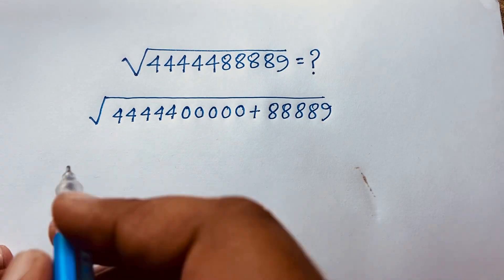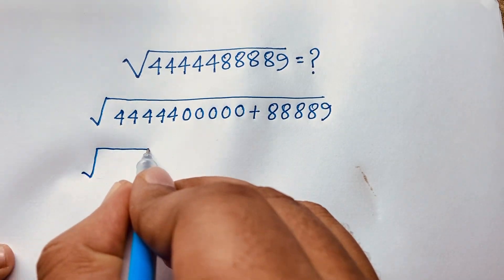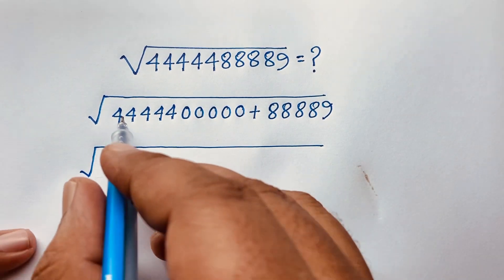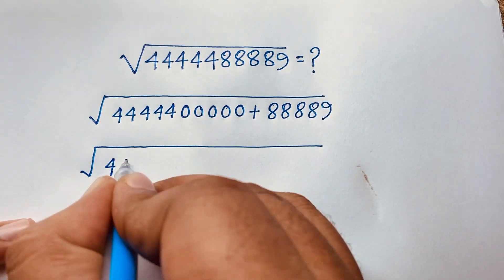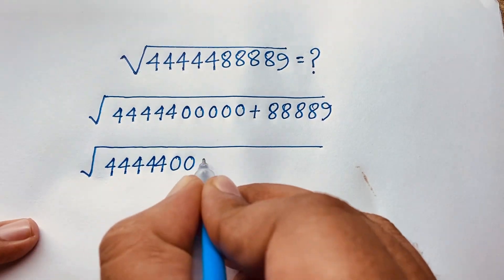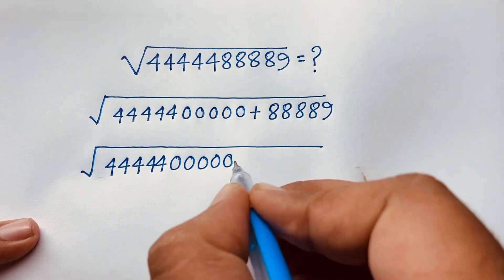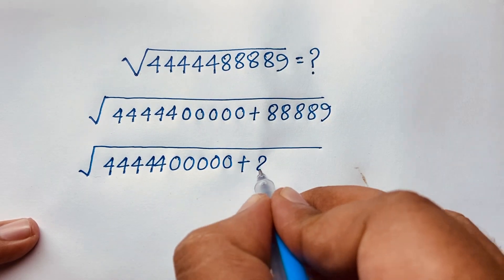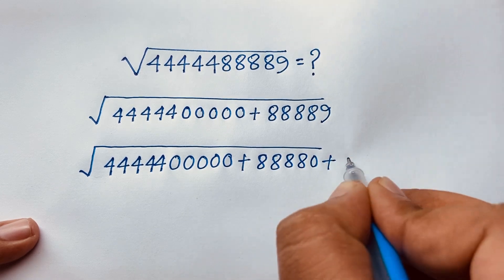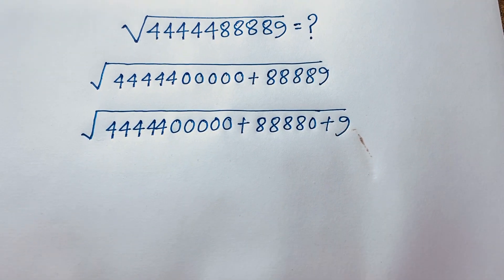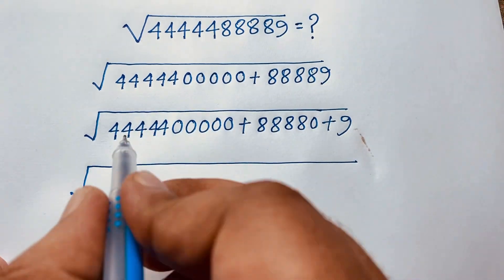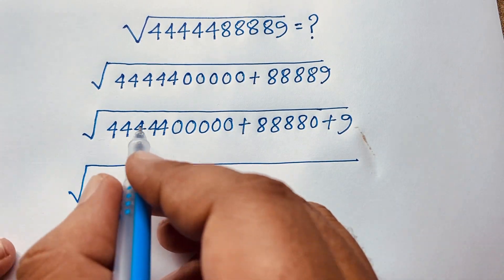Now you can easily see here the square root. I can express this: it will be 4 — five times — so 44444, plus it will be 88880 plus 9. Now here under the square root, you can easily see that 4 is common, so if I take 4 as common...